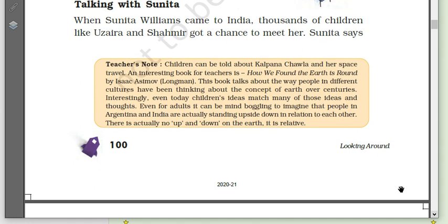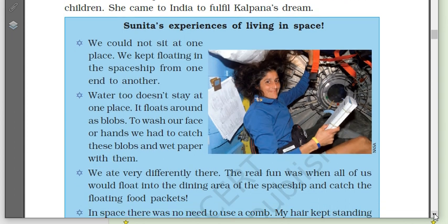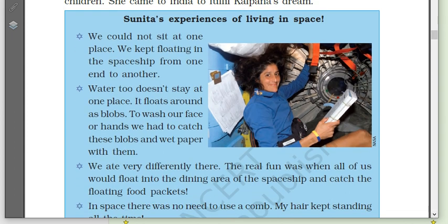When Sunita came to India, thousands of children like Uzaira and Shahamir got a chance to meet her. Sunita says her friend Kalpana Chawla had wanted to come to India and meet children. She came to India to fulfill Kalpana's dream. Kalpana was the first lady. Now let's look at Sunita's experiences of living in space.